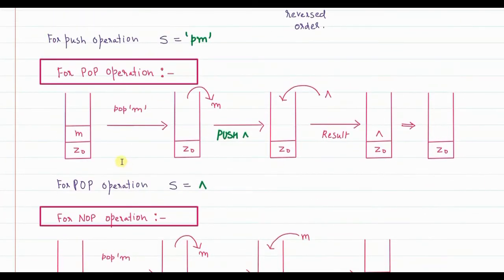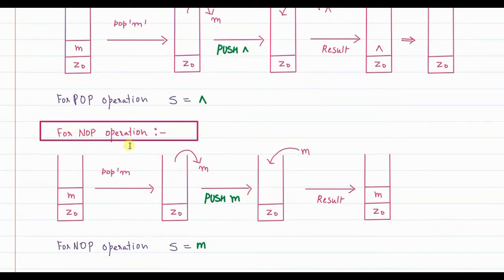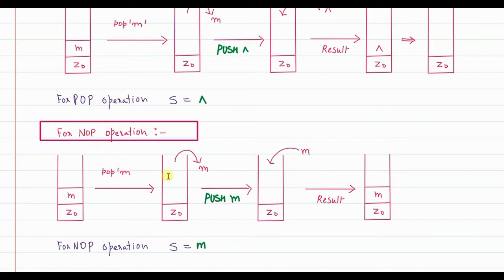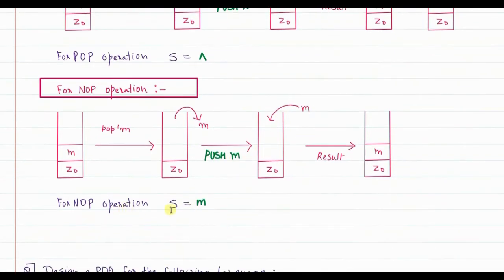For a no operation, 'm' is on top of the stack before and after the operation. To achieve this, first pop 'm' out, then push 'm' back in. So for a no operation, the 's' value is 'm' — the same element that was on top. In summary: push → s is the new concatenated string; pop → s is null; no operation → s is the same top element.